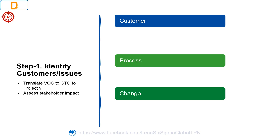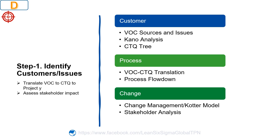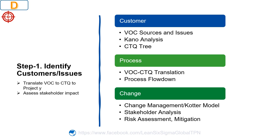Common tools to be used: VOC sources and issues — to drive outside-in thinking and avoid assumptions; Kano analysis — to identify hidden expectations; CTQ tree — to move from vague needs to specific requirements; SIPOC — to identify the output of an internal business process; Linkage to business strategy; Change management — to understand key success factors; Stakeholder analysis — to understand who impacts and influences; and Risk assessment — to identify unintended consequences that could affect project execution.